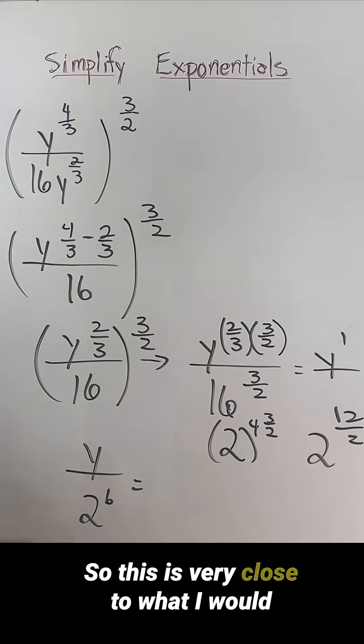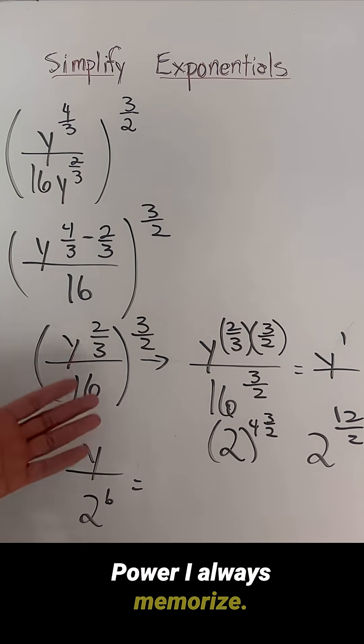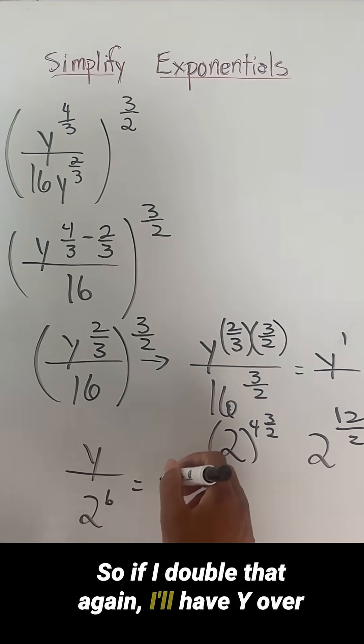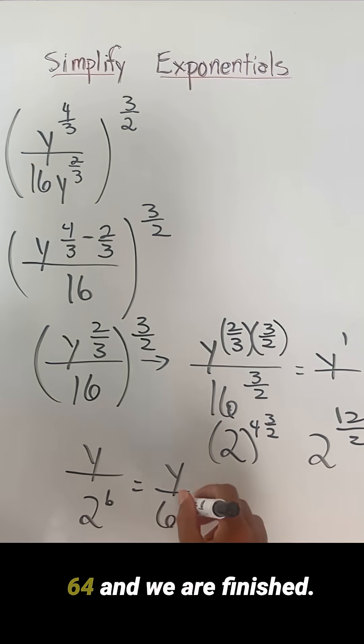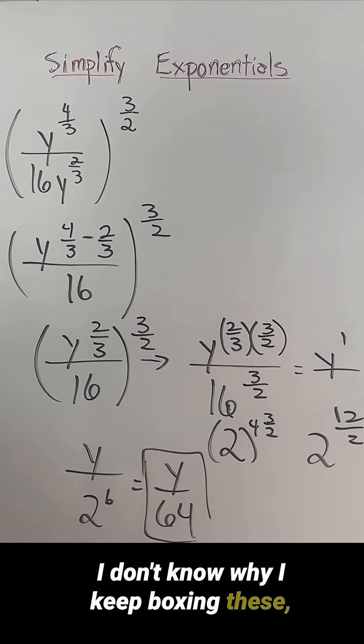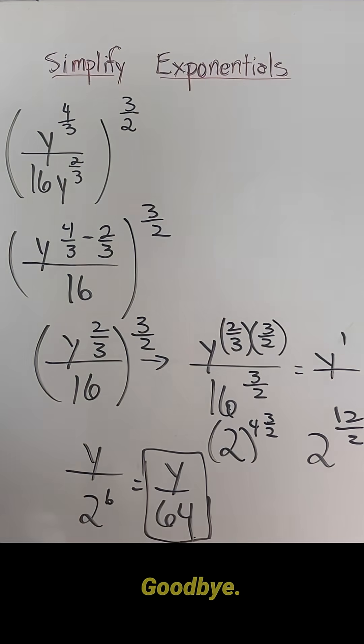So this is very close to what I would have for an answer. I have y over two to the sixth power. Now, two to the sixth power, I always memorize two to the fifth power is 32. So if I double that again, I'll have y over 64 and we are finished. I don't know why I keep boxing these. I'm just trying to highlight the answer there and we're done. Thank you. Goodbye.